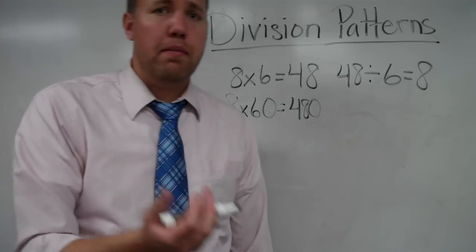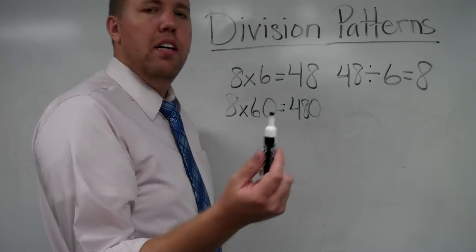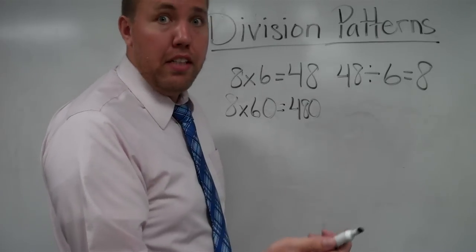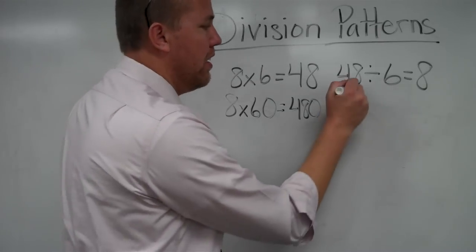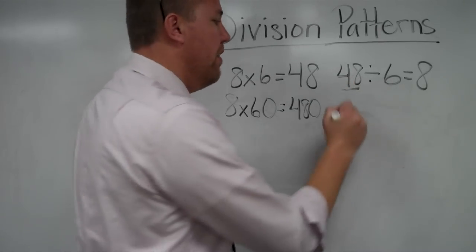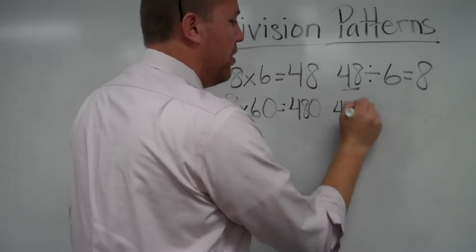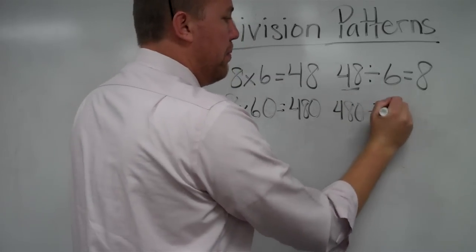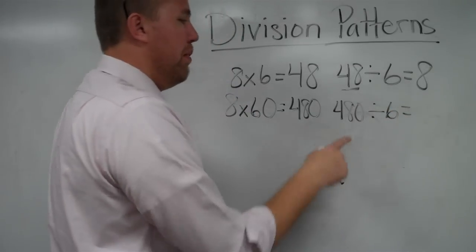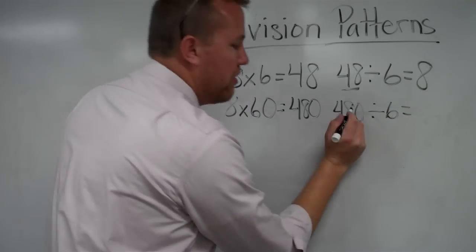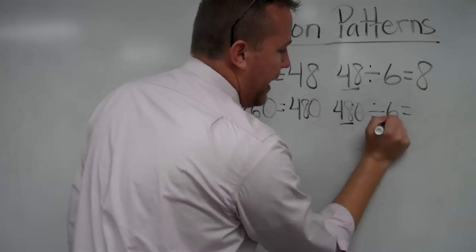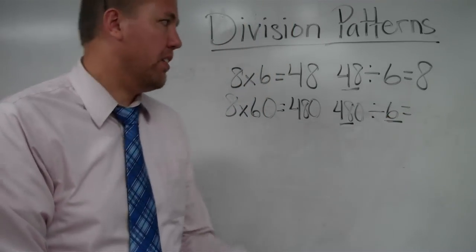Now, it's the same thing with division. However, we start with the dividend, the thing that is being divided. So whatever is being divided, that's where we have that 0. 480 divided by 6. Because that extra 0 is there, we just look at the division fact. What's 48 divided by 6?